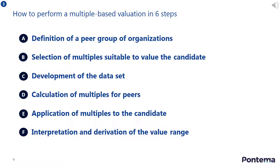In this final section of the lesson, you will learn how to perform a multiple-based valuation in six steps and apply the theory to a case study. The six steps are: firstly, to define the peer group of organizations; secondly, to select the multiples suitable to value the candidate organization or asset; thirdly, to develop the data set for the valuation analysis; fourthly, to calculate the multiples for the peer group of organizations; fifthly, to apply the multiples to the candidate organization or asset; and lastly, to interpret and derive the range of values for your conclusion.